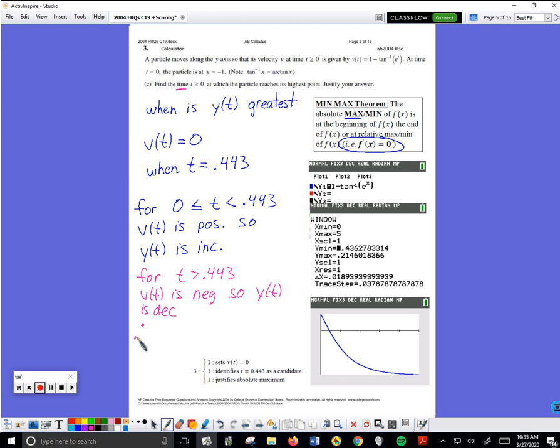Therefore, three dots in the shape of a triangle are a legal symbol on the AP test. Therefore, y(t) is greatest at t equal 0.443.